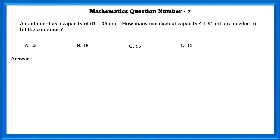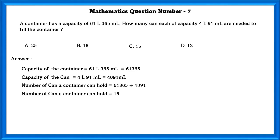Mathematics question number 7. A container has a capacity of 61 liters, 365 ml. How many cans each capacity of 4 liter, 91 ml are needed to fill the container? In order to find how much the container can hold, we have to divide total capacity of the container by the capacity of can, which is equal to 15.